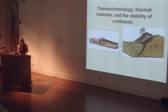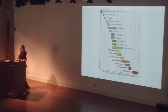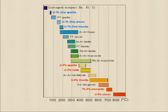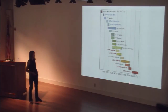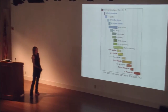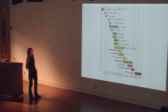Modern thermochronology allows us to gain unprecedented resolution of thermal histories, from really high temperatures on the order of a thousand degrees C down to temperatures as low as 30 degrees C — essentially temperatures at the surface. Rick Carlson showed a slide in his overview plotting some of these different thermochronometers and geochronometers relative to their temperature sensitivity. Some of the closure temperatures of these different minerals have changed since this slide was put together about ten years ago.